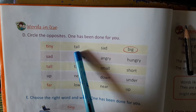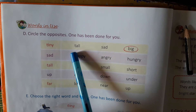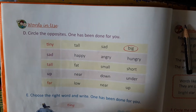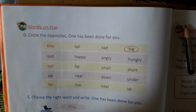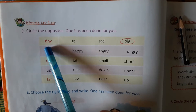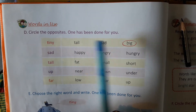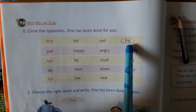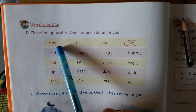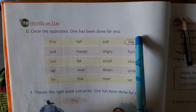मैं आपको answers बता रही हूँ, आप ध्यान से सुनिये. First one — tiny. Tiny का opposite क्या हुआ बच्चो? Big. B-I-G. Tiny यानि की छोटा, big यानि की बड़ा.